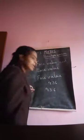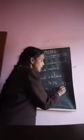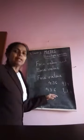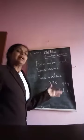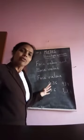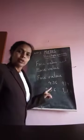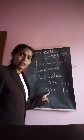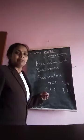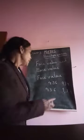Face value of 6 is 6 only. Now let us take another example: 934. What is the face value of 9? It is 9 only. Face value of 3 is 3 only, and face value of 4 is 4 only. So face value of a number does not depend on which place that digit is in — it is that number itself. That is the face value.